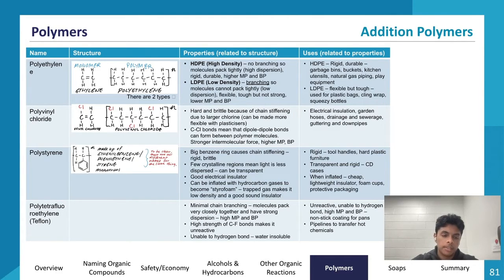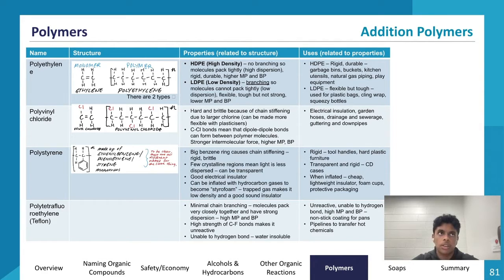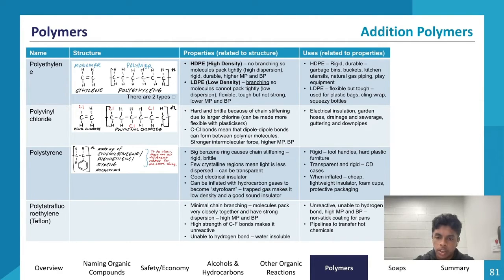PTFE, or polytetrafluoroethylene, has minimal chain branching so molecules pack together very closely, giving it very strong dispersion forces and a high melting and boiling point. The high strength of C-F bonds makes it quite unreactive — those bonds don't readily break. It's also unable to form hydrogen bonds, making it insoluble in water. Because of these properties, PTFE is used for non-stick coatings on pans and in pipelines to transfer hot chemicals.